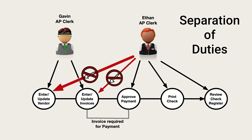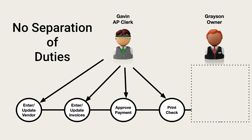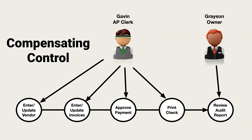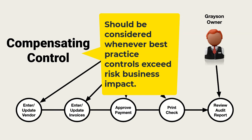The problem arises when this function is performed in an organization with only a single AP clerk. The organization would have to hire an additional clerk to implement separation of duties, which is a cost too high for just implementing a security control. In this example, a small business has only a single AP clerk that also performs all other financial transactions. Gavin reports directly to Grayson, the business owner, with no separation of duties. A compensating control is implemented: the business owner uses an audit report to review AP activity, showing products and services provided, the vendor, invoice amount, check number, and any other information needed to detect anomalous behavior.